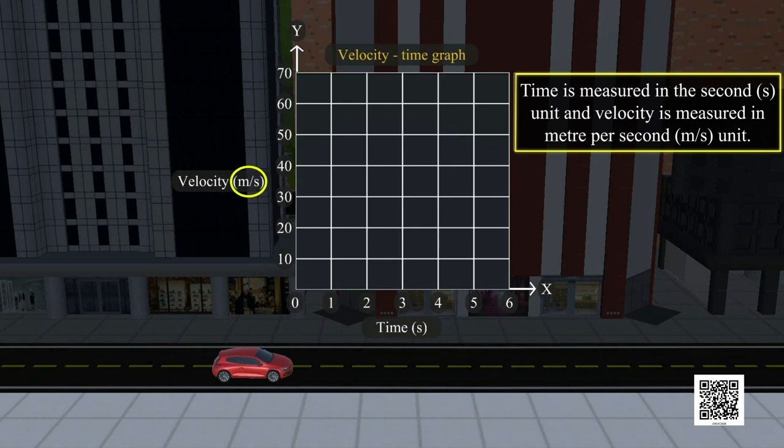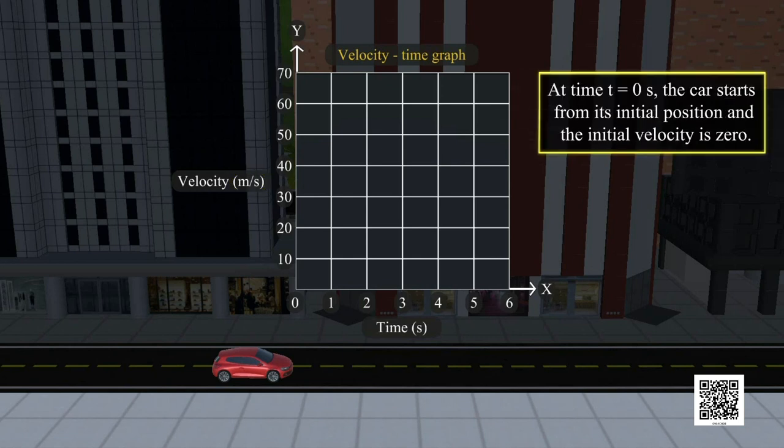velocity is measured in meters per second (m/s unit). At time t equals zero seconds, the car starts from its initial position and the initial velocity is zero.